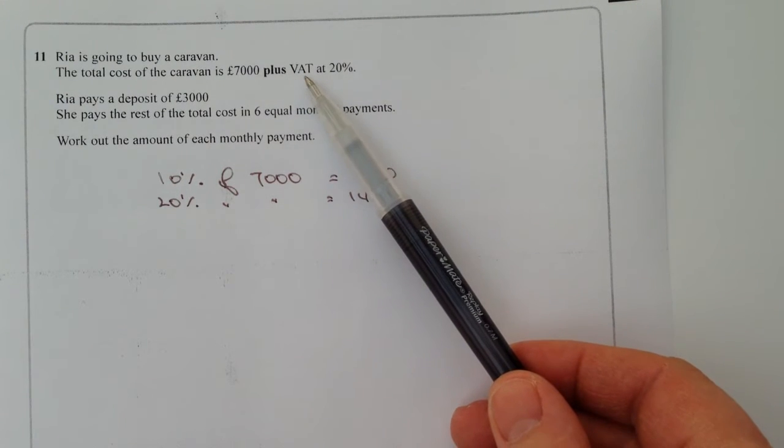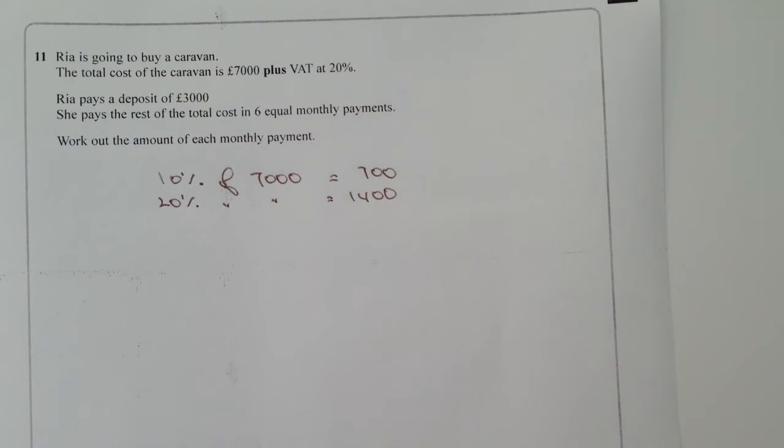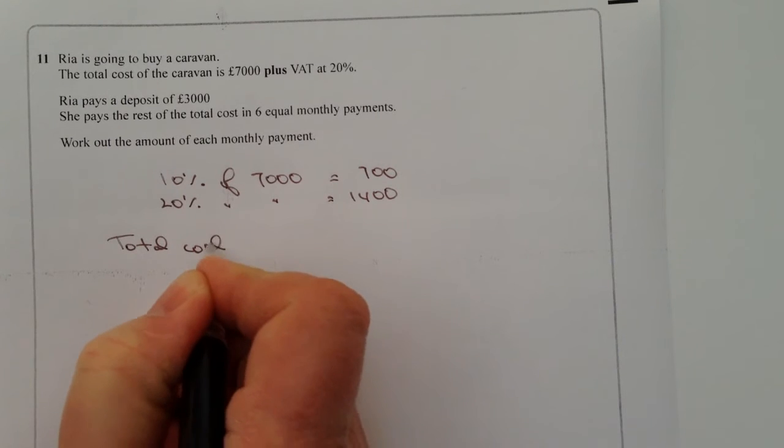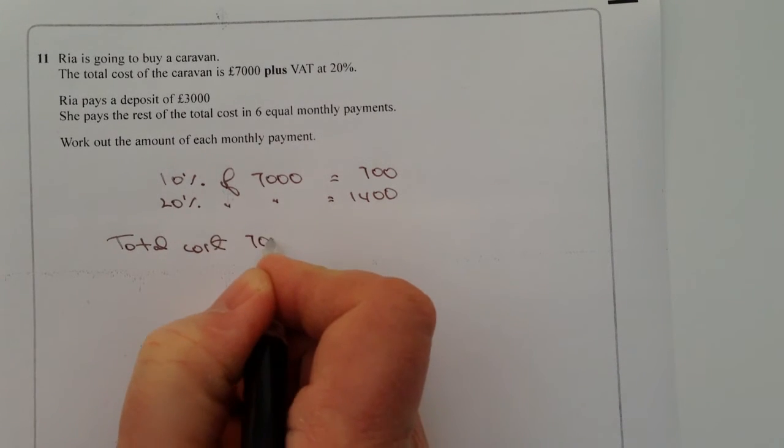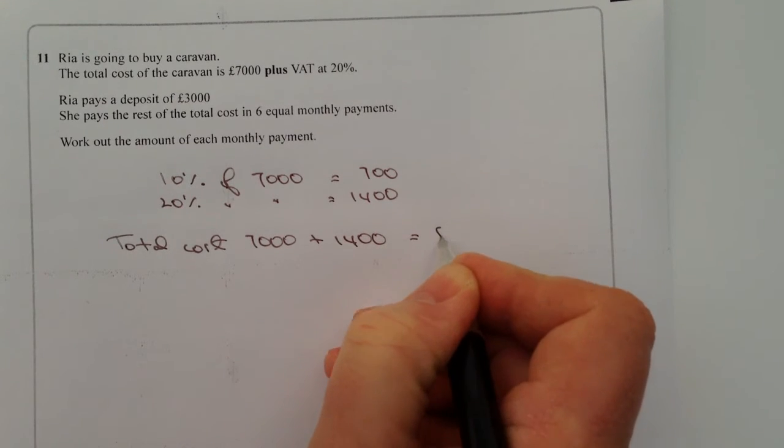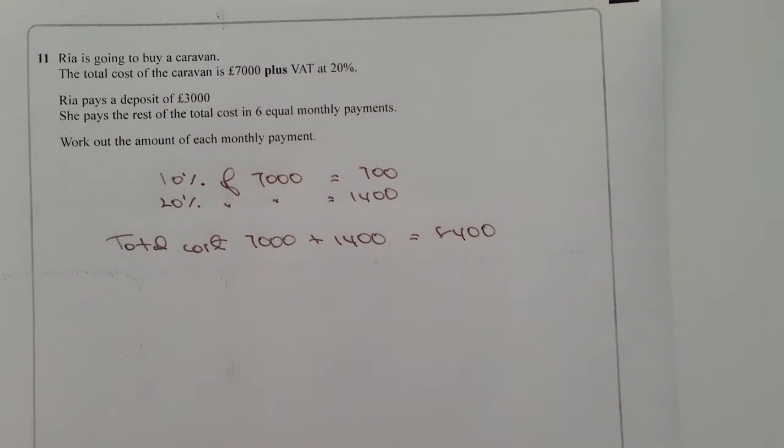So in other words, the total cost now of the caravan is those two numbers added together. We're going to add the 7,000 plus the 1,400, and that's going to give us a value of £8,400.